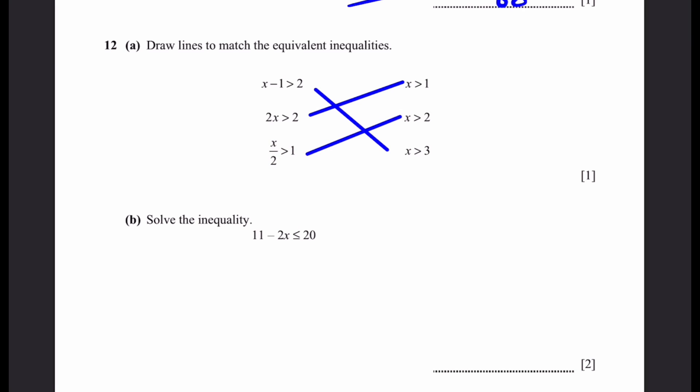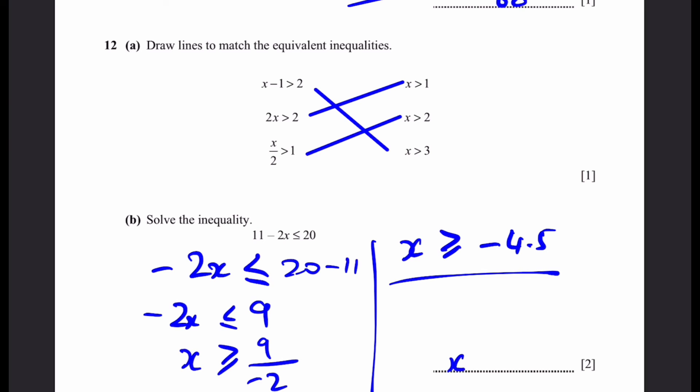Part b. Solve the inequality. 11 minus 2x less than or equal to 20. That means minus 2x is less than or equal to 20 minus 11. Minus 2x is less than or equal to 9. Now we can do x is less than or equal to 9 by minus 2. The only thing wrong with this step is because we're dividing by a negative number. If we're dividing by a negative number, we have to flip the sign. Now it's less than or equal to, so we write greater than or equal to. Therefore, x is greater than or equal to minus 4.5. That's the answer.